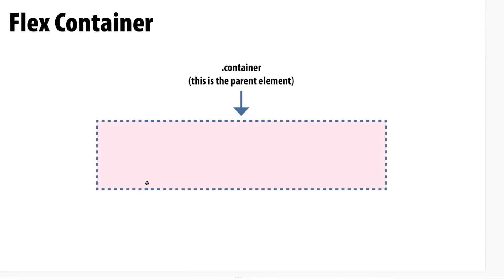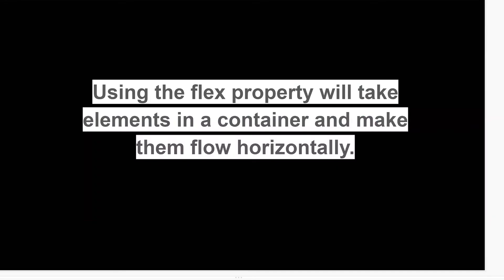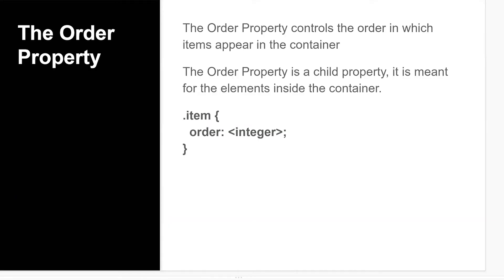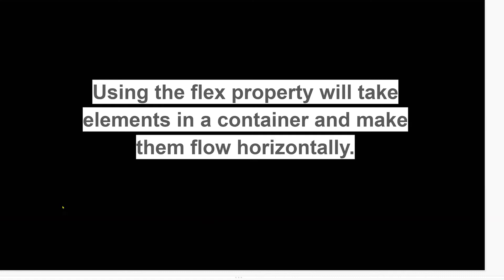It doesn't have to be dot-container — it can be anything, like dot-box — as long as the parent has a display property with the value set to flex. That basically takes block elements that flow top to bottom and makes them inline, flowing horizontally.